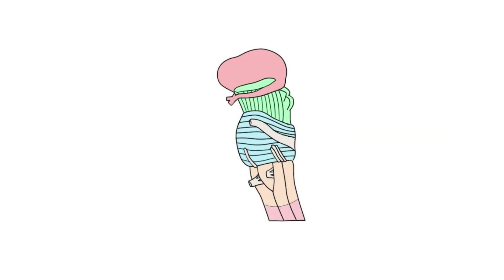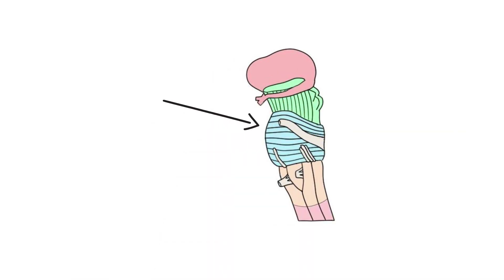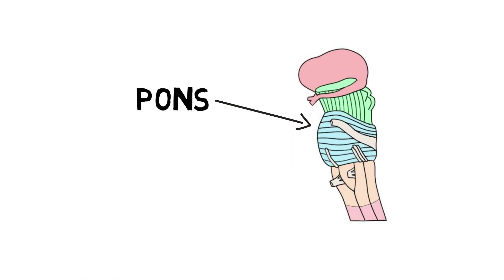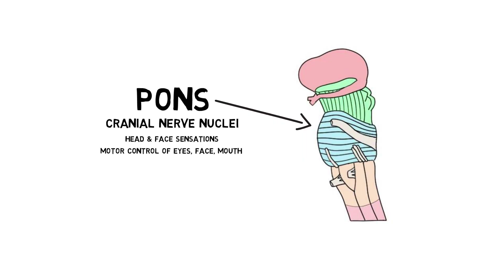The next structure on our way up the brainstem is the pons. The word pons means bridge in Latin, and the pons is a large, rounded structure resembling a bridge that connects the two hemispheres of the cerebellum. The pons is home to a number of nuclei for cranial nerves and contains nuclei that deal with sensations from the head and face, movement of the eyes, face, and mouth, hearing, equilibrium, and autonomic functions like tear and saliva production.